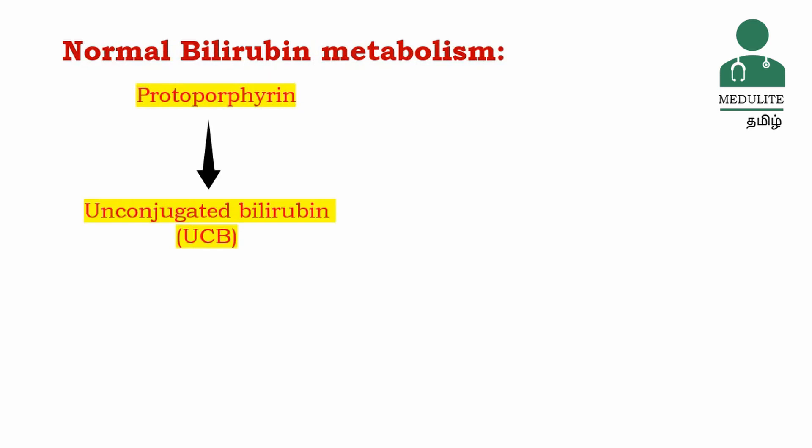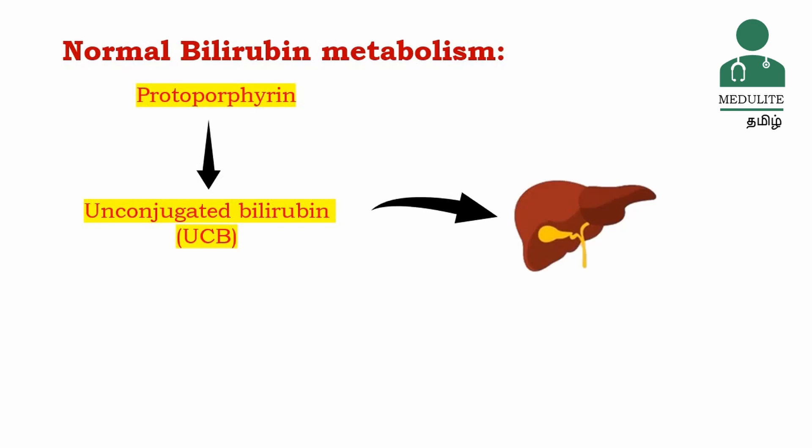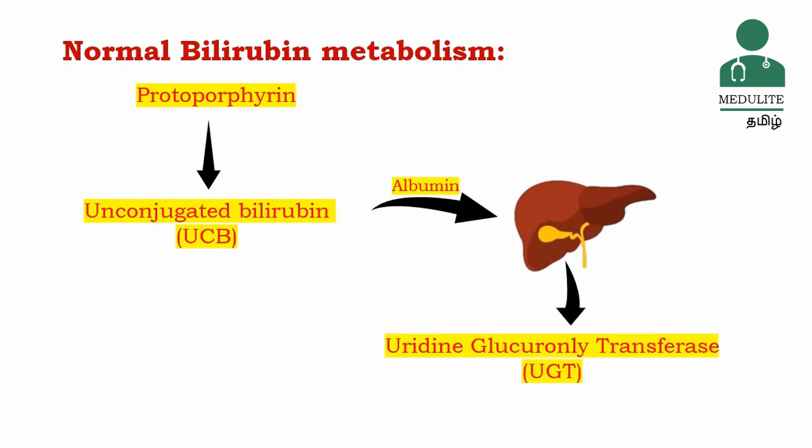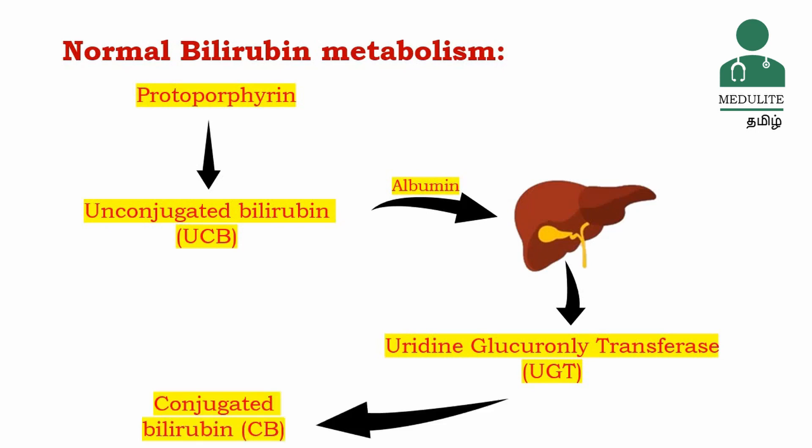This is the unconjugated bilirubin. Unconjugated bilirubin is very strong and not soluble — it is fat soluble. It binds to albumin, which is a protein in our blood. In the liver, there are hepatocyte cells. The enzyme uridine glucuronosyl transferase (UGT) conjugates the bilirubin to form conjugated bilirubin.